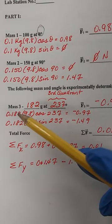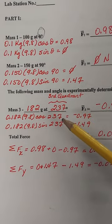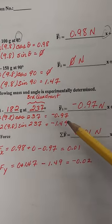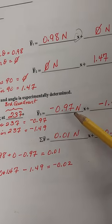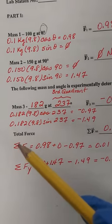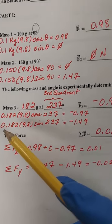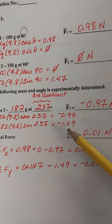0.182 kilograms times 9.8 times the cosine of 237 gives us negative 0.97 newtons, which we put for the third force in the x direction.